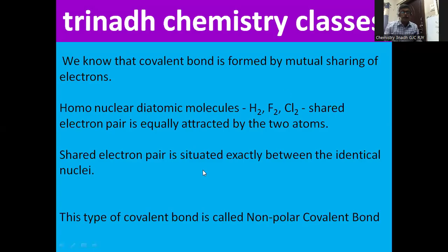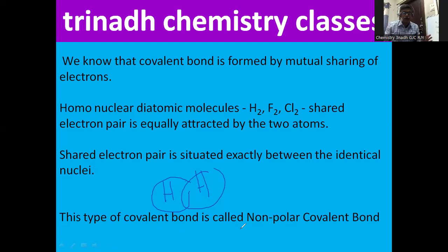In homonuclear diatomic molecules, the shared electron pair is equally attracted by the two atoms. Hence, the shared electron pair is situated exactly between the identical nuclei. For example, in H₂, the shared electron pair lies equidistant from the two nuclei of the two hydrogen atoms. This type of covalent bond is called a non-polar covalent bond.